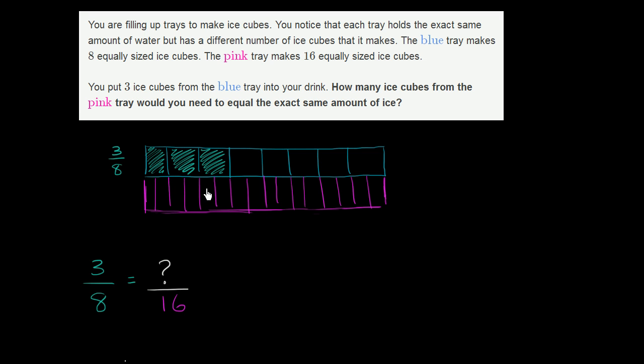Well, let's look at it over here visually. So if we want the exact same amount of ice, we're going to have one, two, three, four, five, six. We have six over sixteen. So this is equal to six over sixteen.